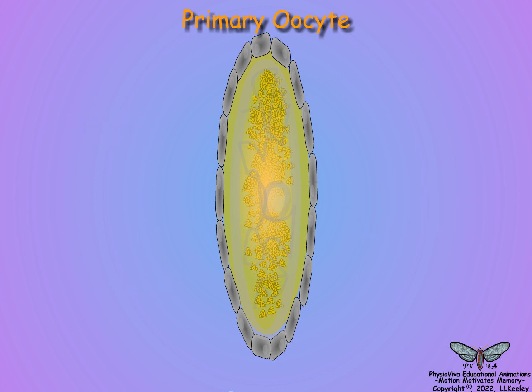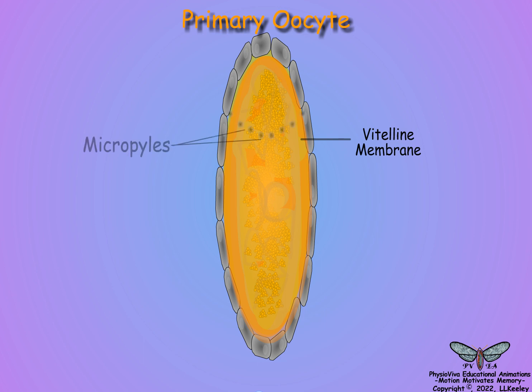The vitelline membrane is considered the first layer of the shell. It is variable in structure and forms by the coalescence of droplets deposited over the egg. The vitelline membrane surrounds the entire egg except at the micropyles, where sperm can penetrate into the oocyte.